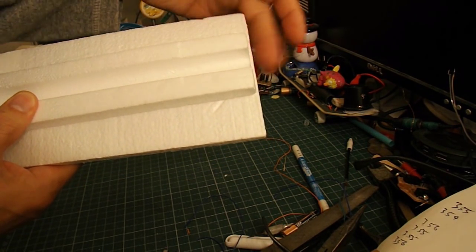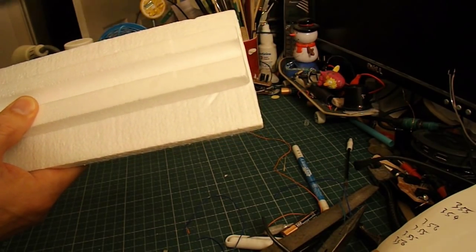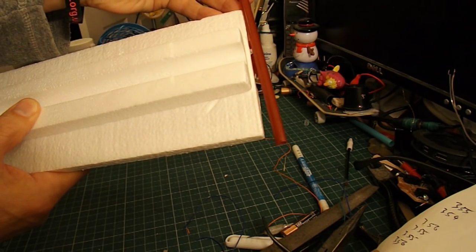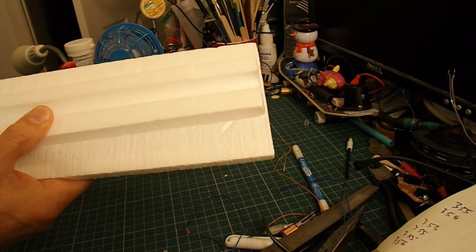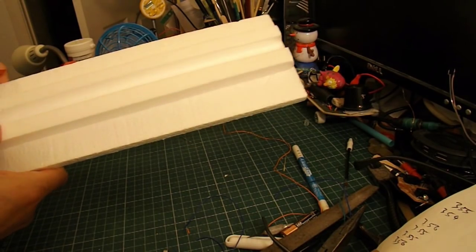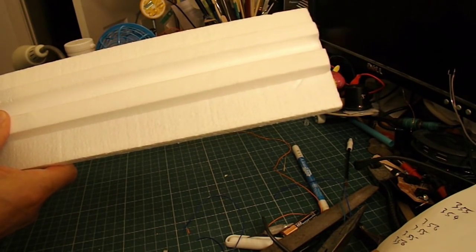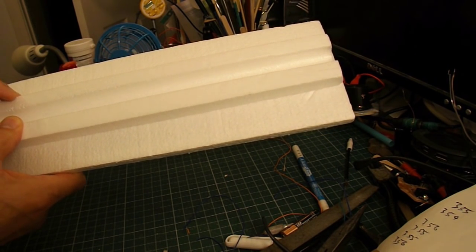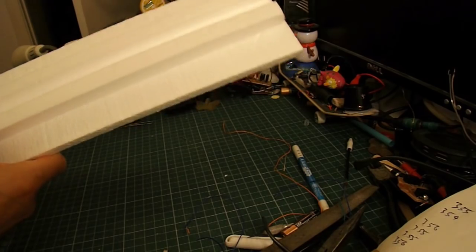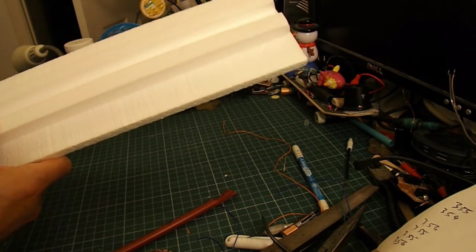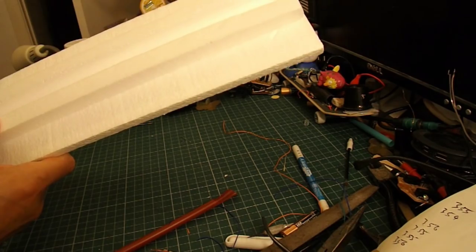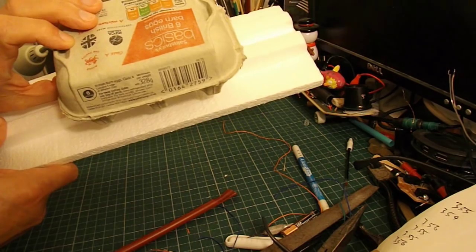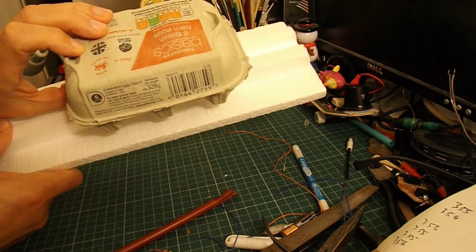And we'll just put a drinking straw or something at one end for the axle to go through, and the same at the other end. Not sure how long to make it. I don't know, 12 inches, something like that. Whatever my ruler measures when I cut it. And I've got an egg box, so I'll just glue that on it somewhere. And we'll see if it works.